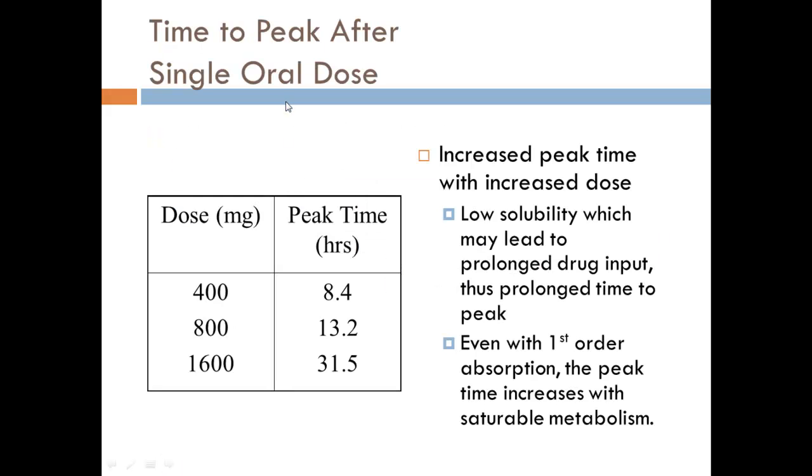How long does it take to get to the peak after a single dose? This actually will change again because of the nonlinearity. It takes longer to get to the peak with an increased dose. If you give 400 milligrams at one time, it's going to take about eight hours to get to the peak concentration. If it's 800 or 1,600, it's going to take a while.